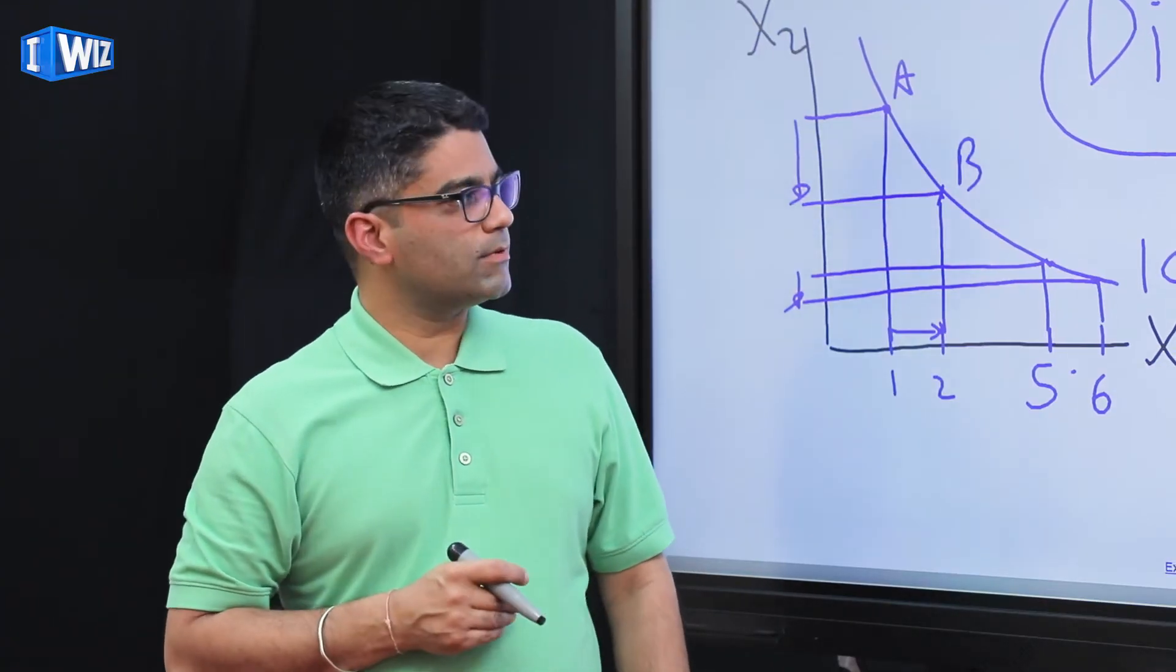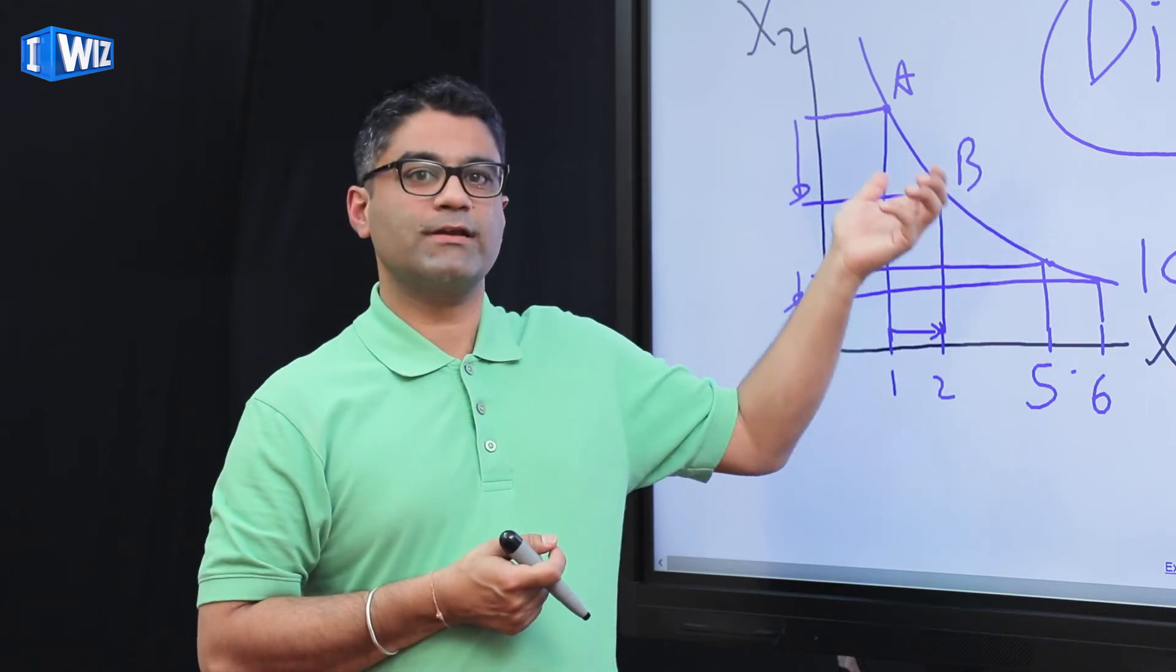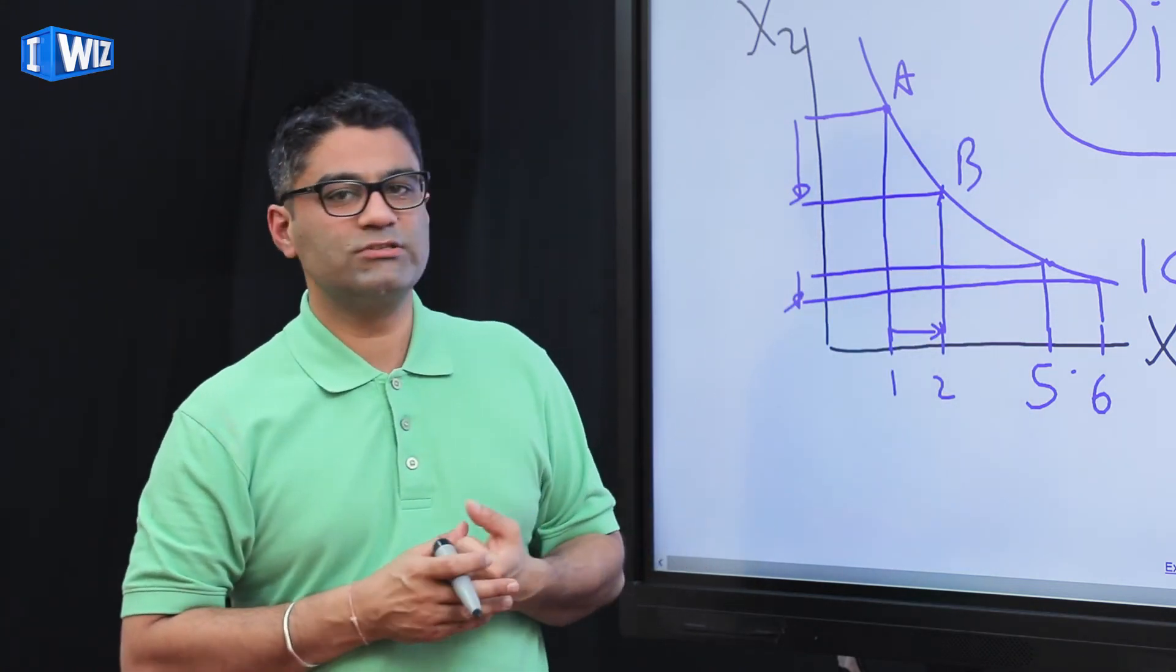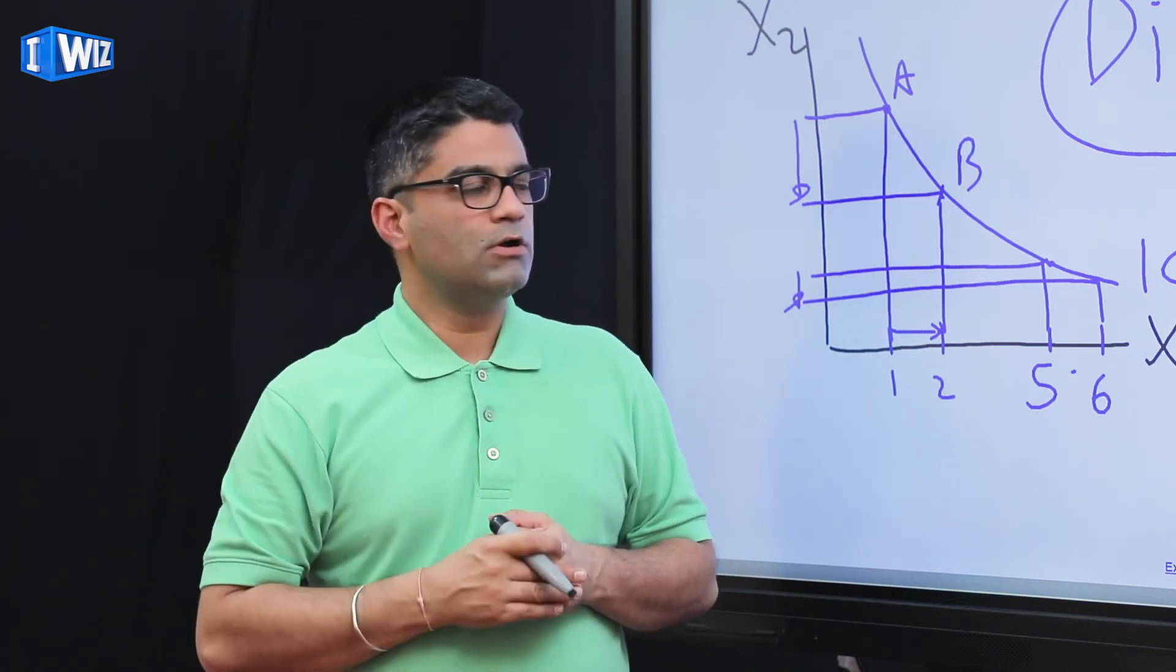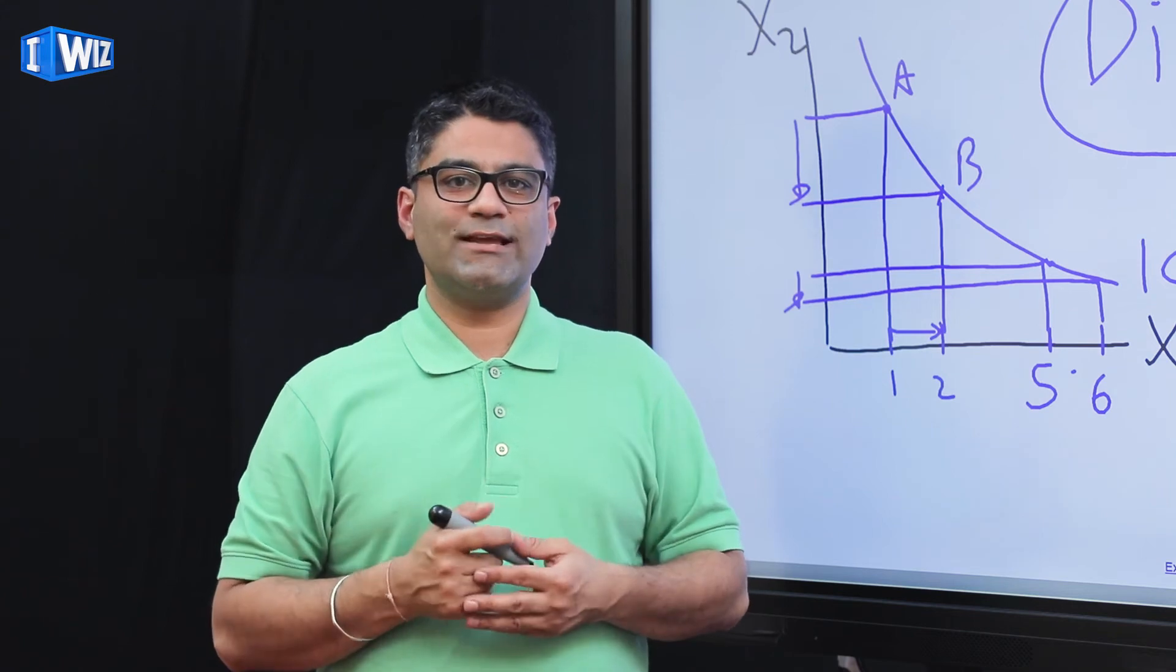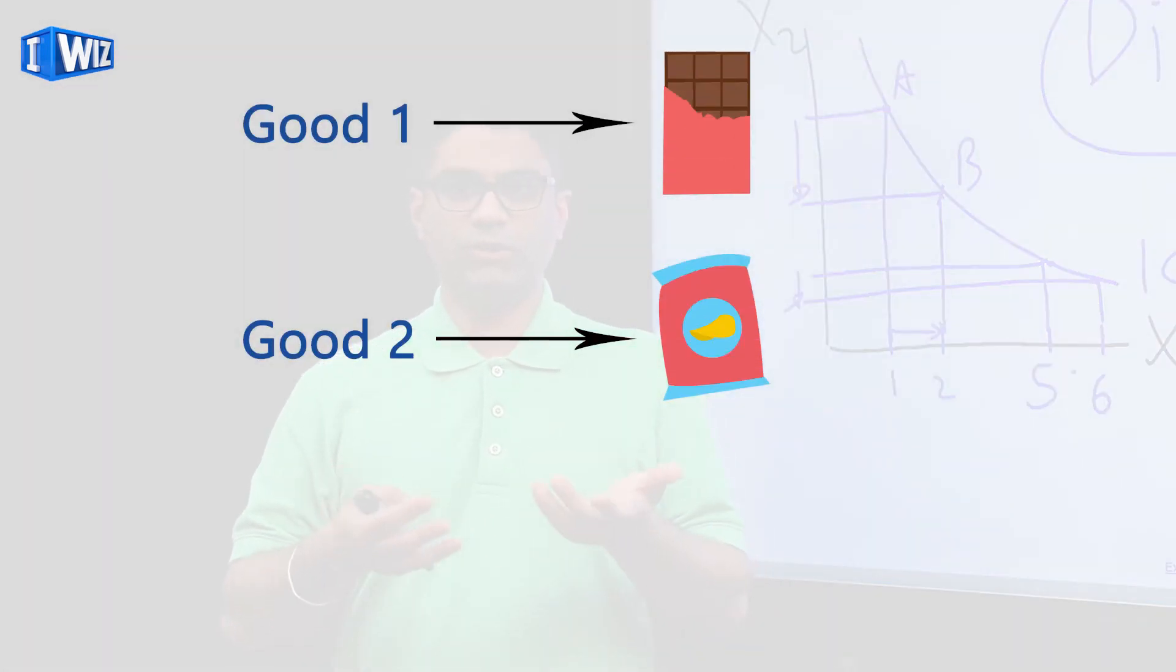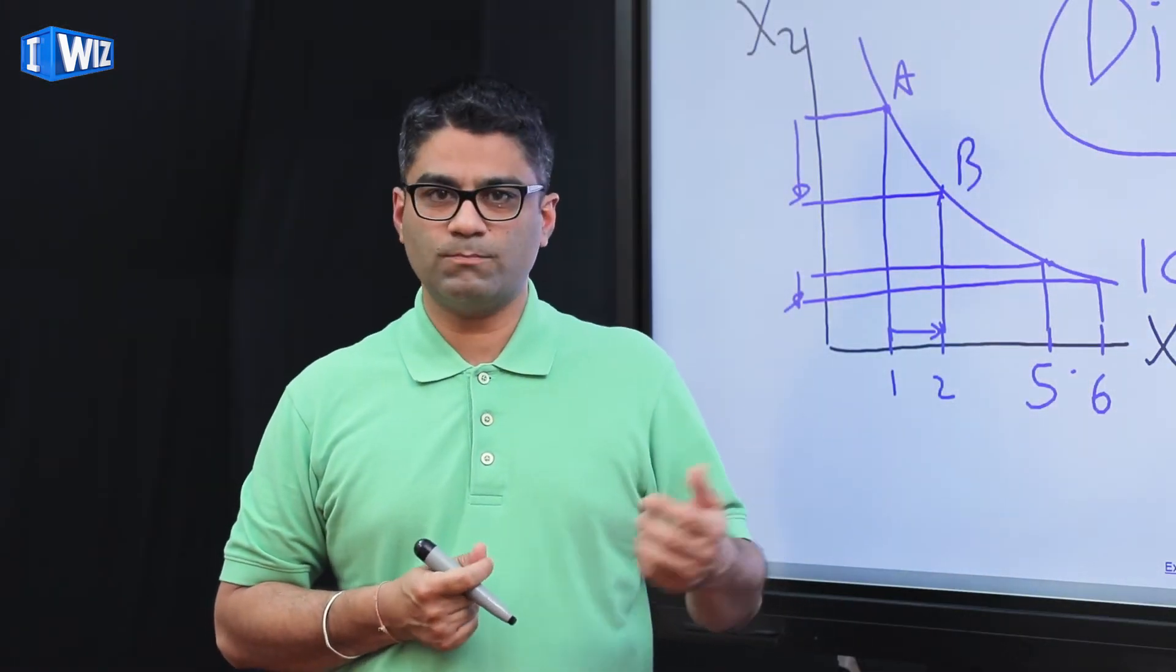You now should be very comfortable with the concept of indifference bundles and indifference curve, which is a graphical representation of that. I've used food and water and jeans and clothes as examples to illustrate this point over the last few videos. But to make sure, let me pick another couple of goods. Let's say you're somebody who likes to eat both chips and chocolates. If you don't like that, pick two goods which you like to have both.